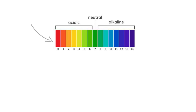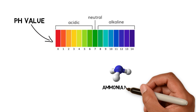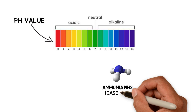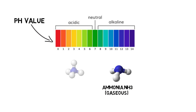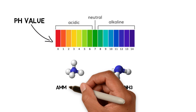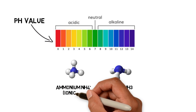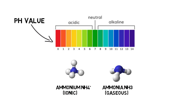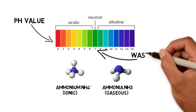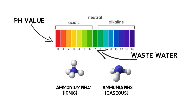Depending on the pH value of water, ammonia nitrogen converts either into gaseous ammonia NH3 or into the ionic form ammonium NH4+. Typical wastewater conditions allow almost only the ionic form ammonium NH4+.